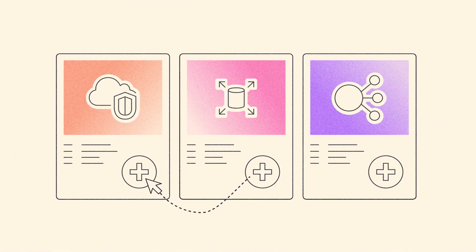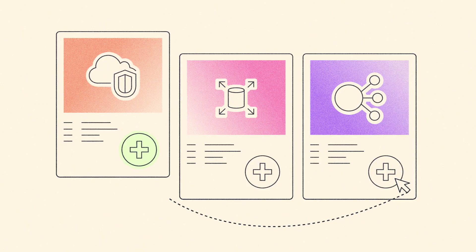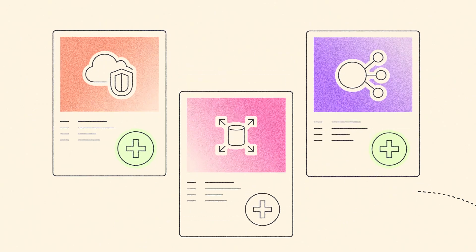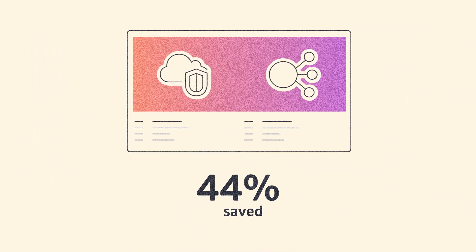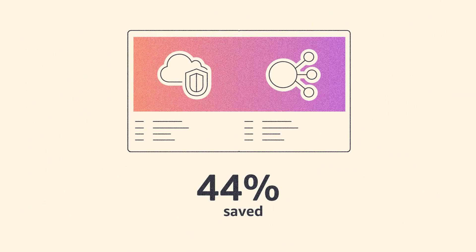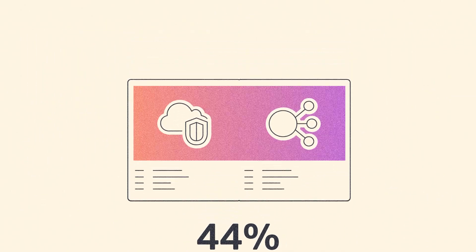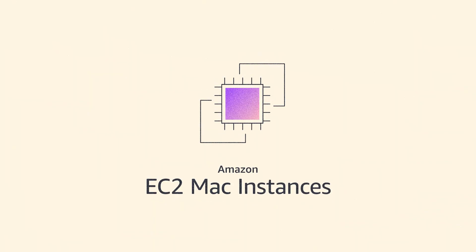You only pay for the resources you actually use, saving up to 44%. Start building with Amazon EC2 Mac instances.